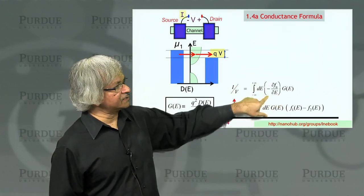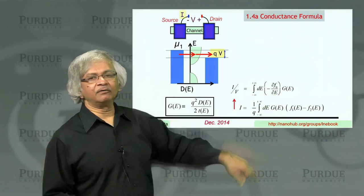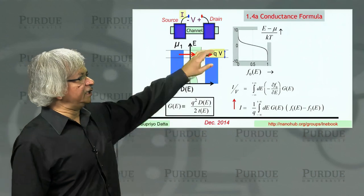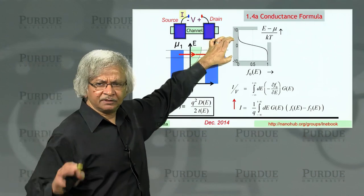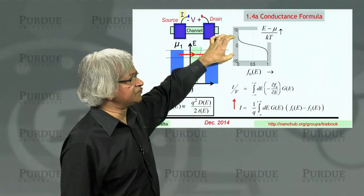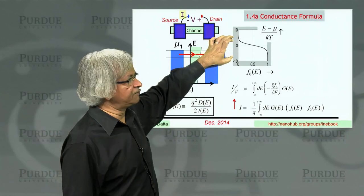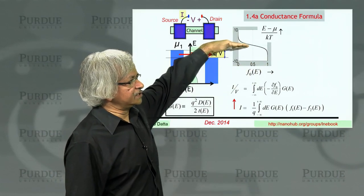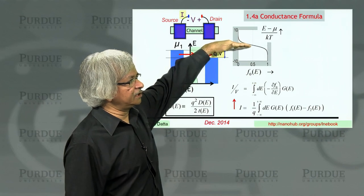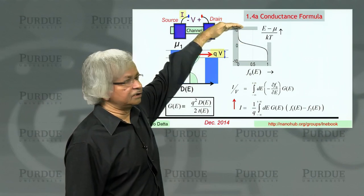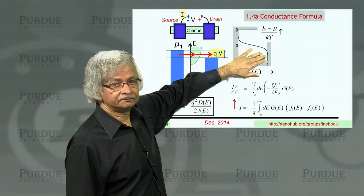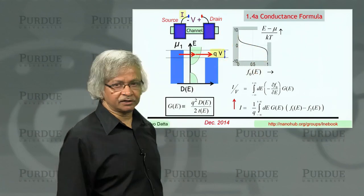Notice what enters this relation is the derivative of the Fermi function. Now, if you remember, probably in the second lecture, we discussed this Fermi function. The Fermi function, as you know, has this electrochemical potential. Above the electrochemical potential it goes to zero, below the electrochemical potential it goes to one.